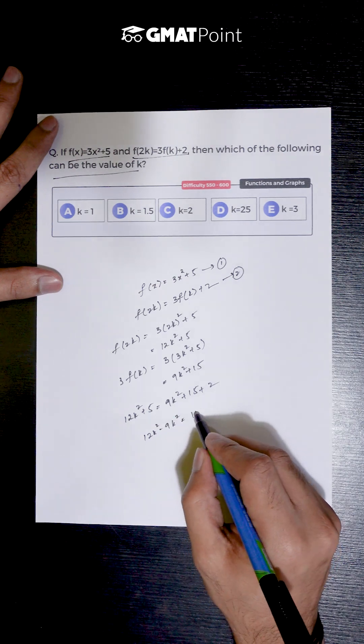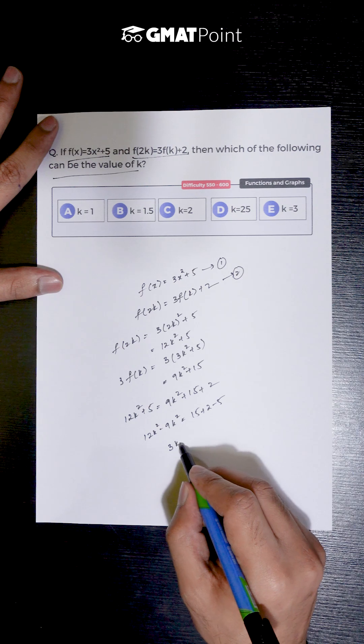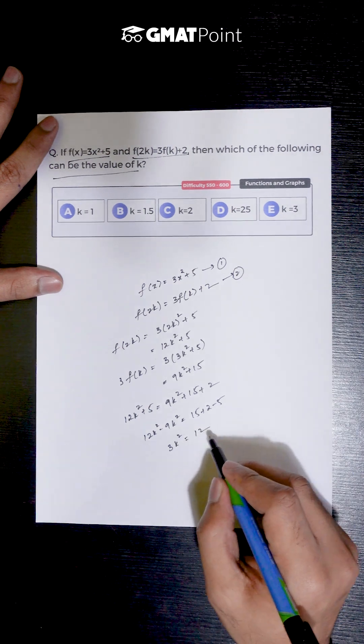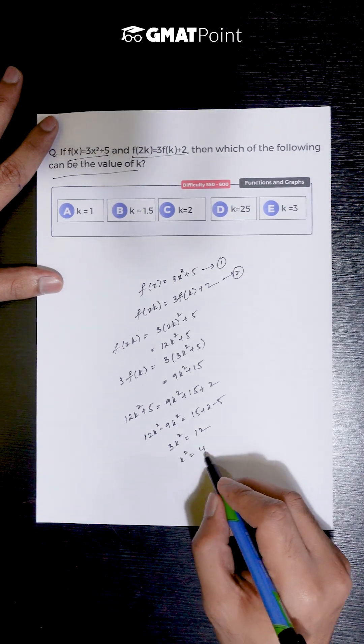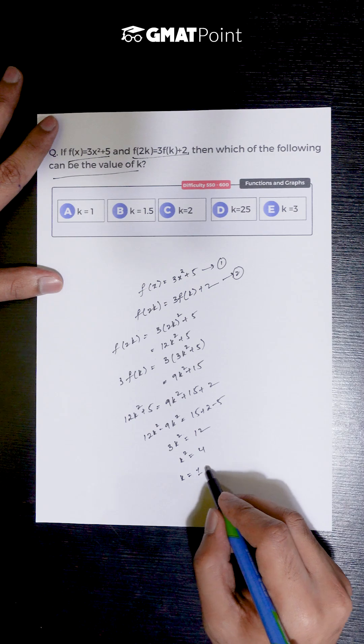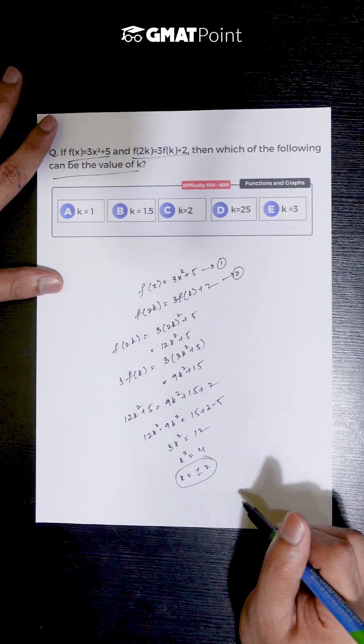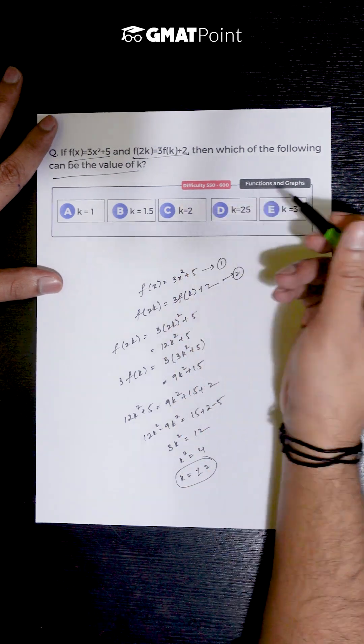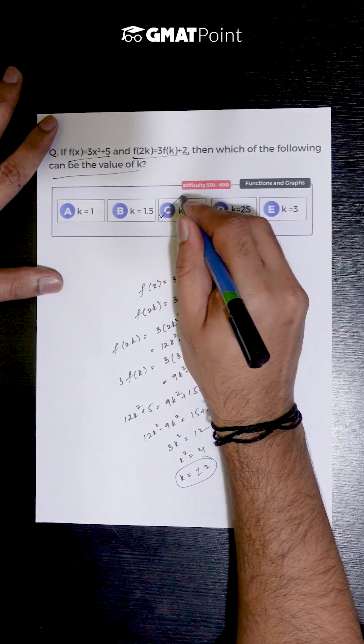We get 3k² = 12 and k² = 4. So the value of k can be either +2 or -2. We can see that only +2 is given in the options so the correct answer is option C.